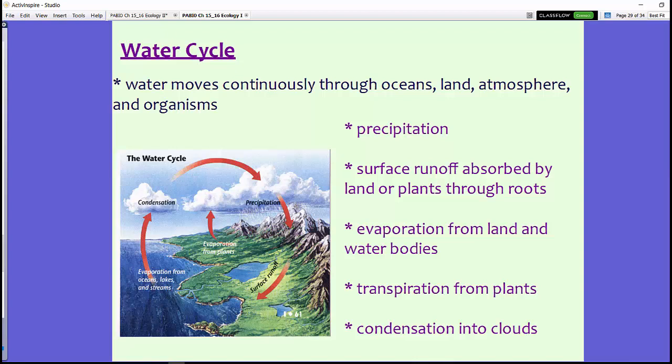A third cycle that we are talking about is nothing that's new to you, and this is the water cycle. We know that water moves continuously through oceans, the land, through the atmosphere, and through organisms. Precipitation comes in the form of rain or snow. Precipitation will fall down to the earth, and the water from that precipitation is absorbed by the land, either through plants, through the roots, by the land itself, or it might run off into the ocean.